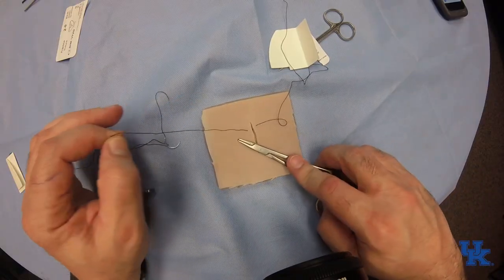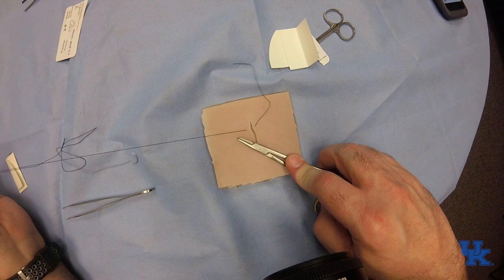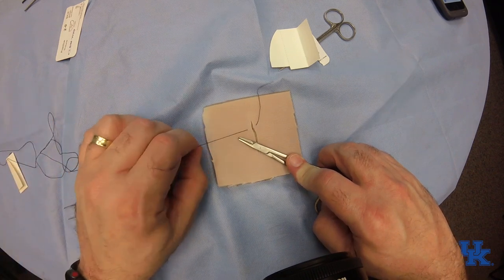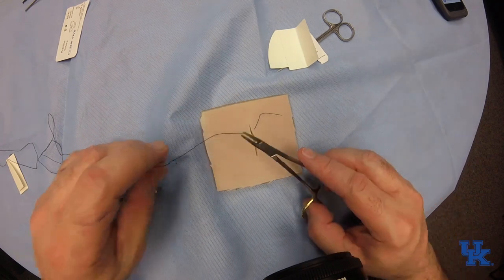Now an instrument tie means that you're going to use your instrument to throw your knots. You can see it on the screen, we're going to pull the string through, it's a long stitch. You just want to leave enough to throw.